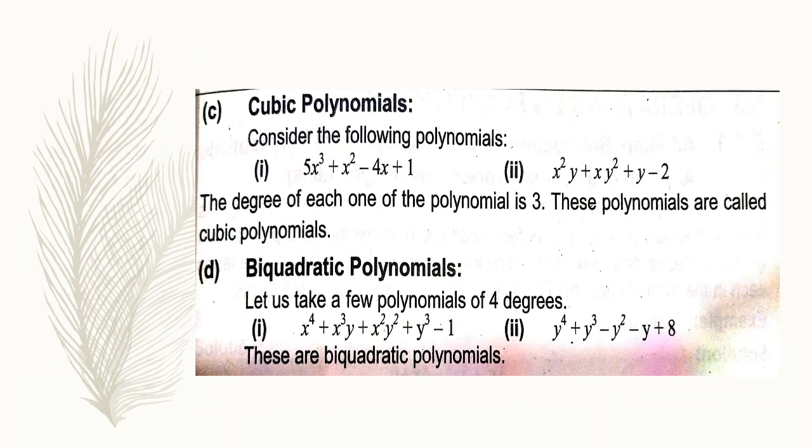Cubic polynomials. As the name shows, cubic means 3. So the degree of the polynomials is 3. The highest degree in the polynomial is 3. So these are the cubic polynomials.